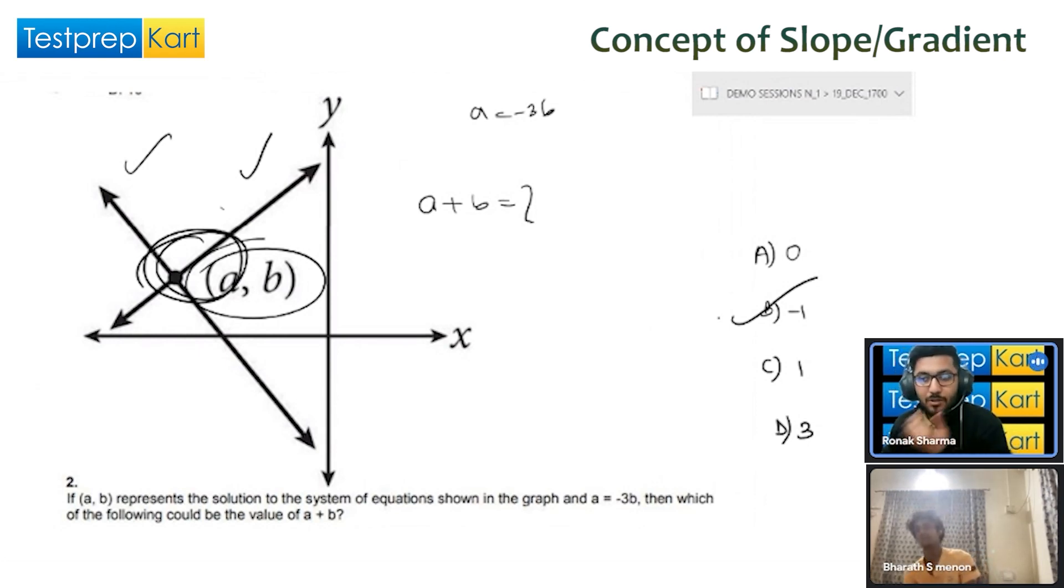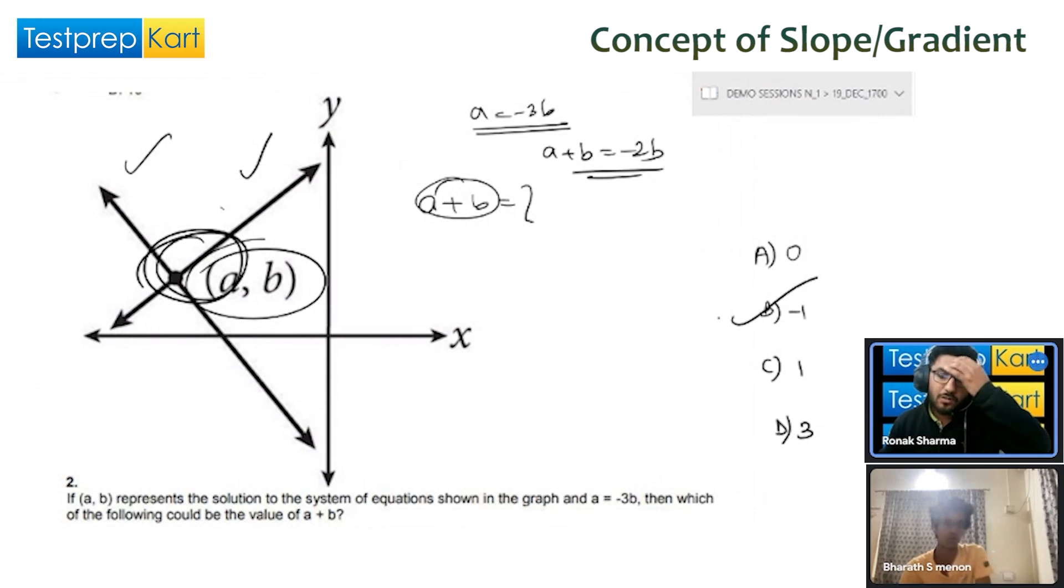Third thing: if they're asking a plus b and they've given a equals minus three b, let us try to create a plus b then we'll think about what to do later. So if a equals minus three b, then a plus b will be minus three b plus b, which equals minus two b. Now what can we do?